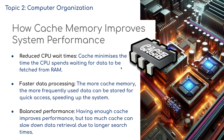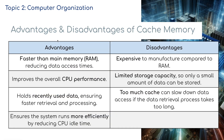Cache reduces CPU wait time by minimizing the time the CPU spends waiting for data to be fetched from RAM. The more cache memory available, the more frequently used data can be stored for quick access, speeding up the system. However, having too much cache can slow down data retrieval due to longer search times.